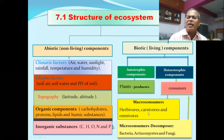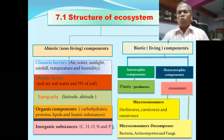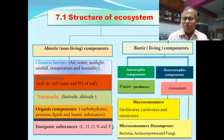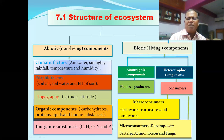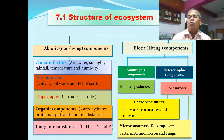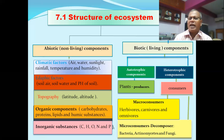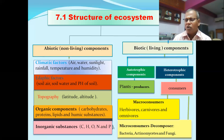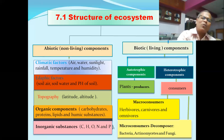Heterotrophs include omnivores, macro consumers, and micro consumers. Macro consumers include large animals, while micro consumers include bacteria, actinomycetes, and fungi. These micro consumers — bacteria, actinomycetes, and fungi — are the decomposers in the ecosystem.